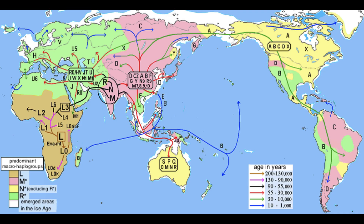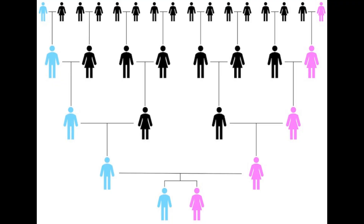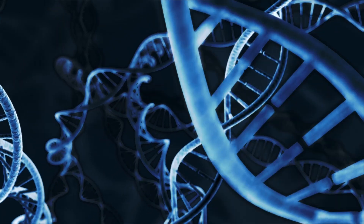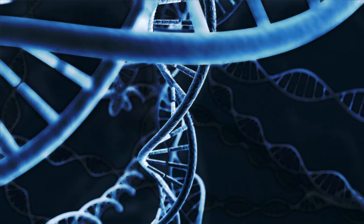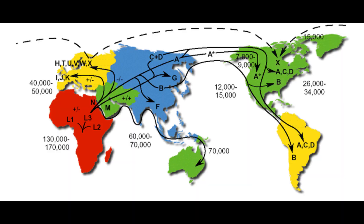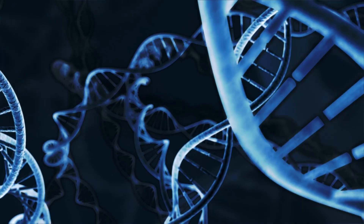Haplogroups are genetic markers that are passed on to offspring, with Y-chromosome haplogroups being passed on from father to son, and mitochondrial haplogroups inherited from mother to daughter and son, but can only be passed on by the daughter through the matrilineal line. In this video I will talk about how haplogroups work, the different haplogroups of the world, and how you can find out your haplogroup and what it can tell you about your ancestry.